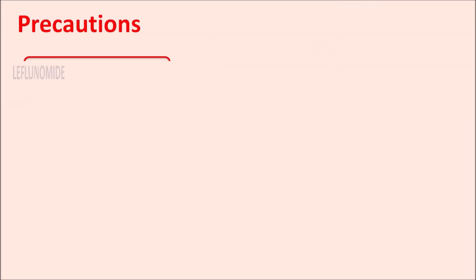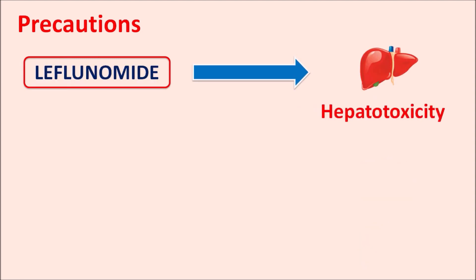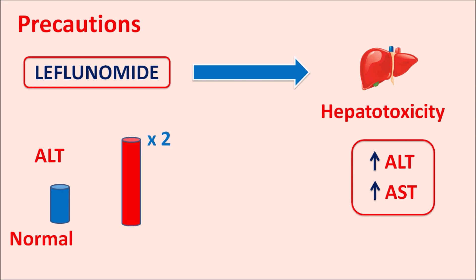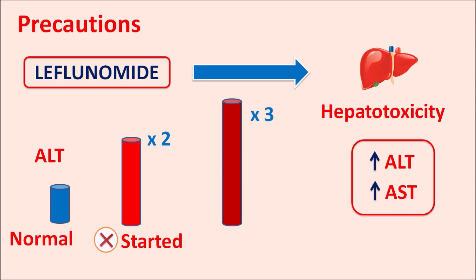An important precaution with leflunomide is its effect on the liver. This drug can produce hepatotoxicity, resulting in elevated liver enzymes — ALT (alanine transaminase) and AST (aspartate transaminase) levels may be increased. This drug should not be started in patients whose ALT levels are two times the upper normal limit. If elevated liver enzymes reaching three times the upper limit are observed after starting the drug, it should be immediately stopped due to the risk of significant hepatotoxicity.